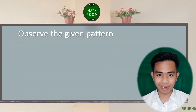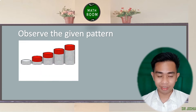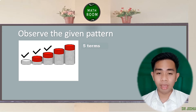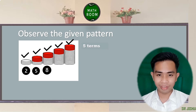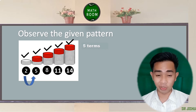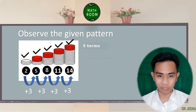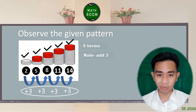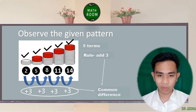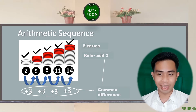Observe and recognize the pattern given. This figure illustrates a sequence with 5 terms. The numerical representation of this figure is 2, 5, 8, 11, and 14. Each term added a constant number of 3 to get the next term, which makes the rule: add 3. The rule or the constant number added in each term is what we call the common difference. That makes this sequence an arithmetic sequence.